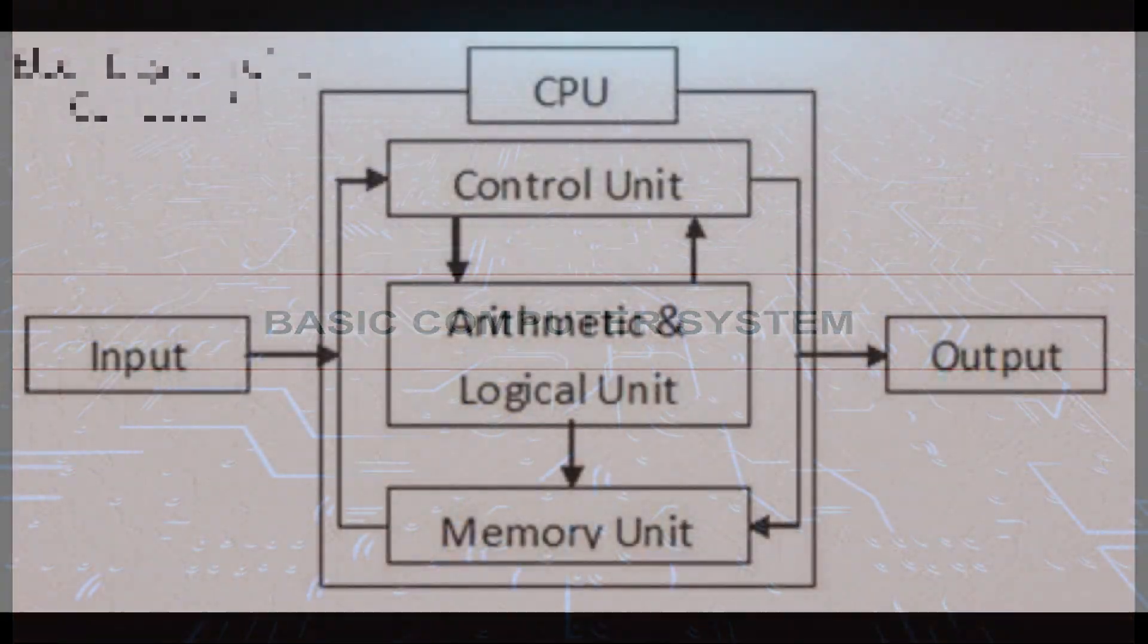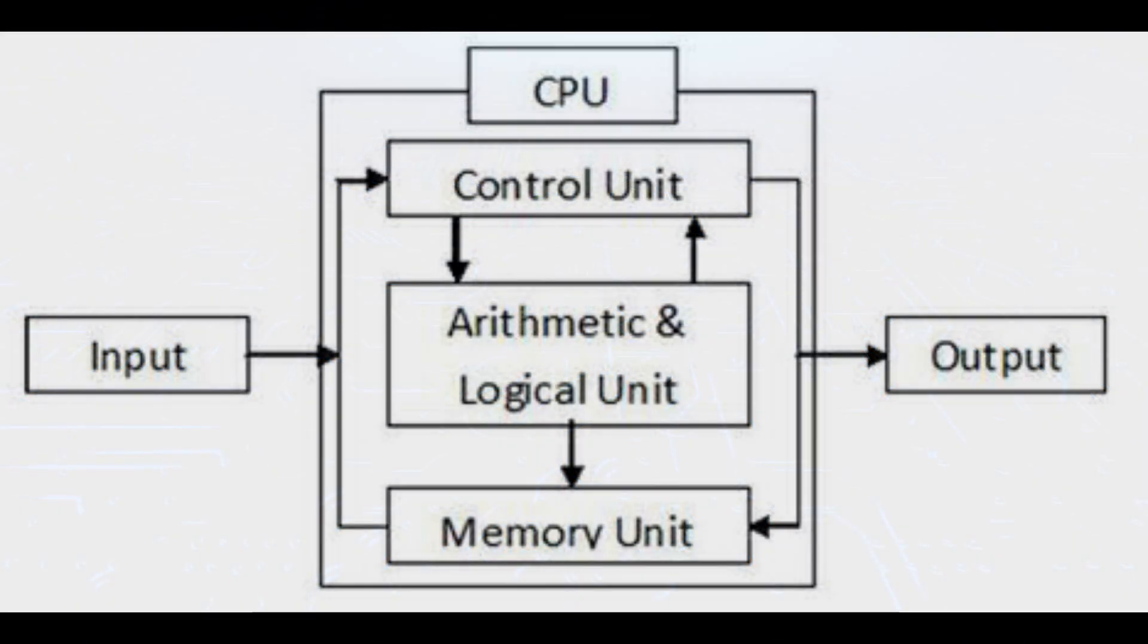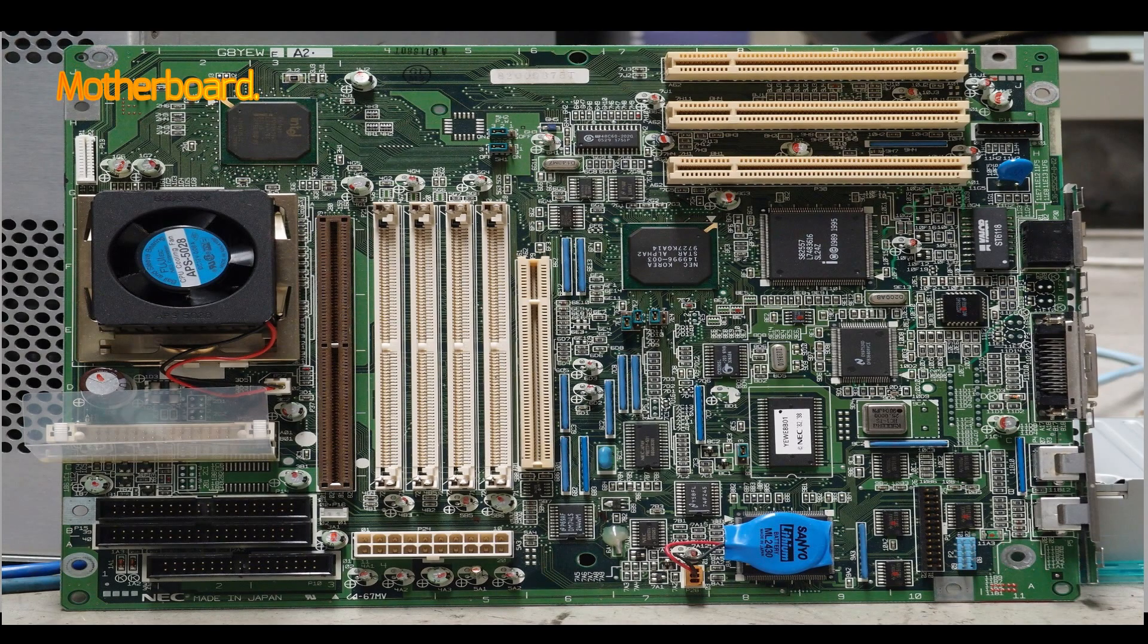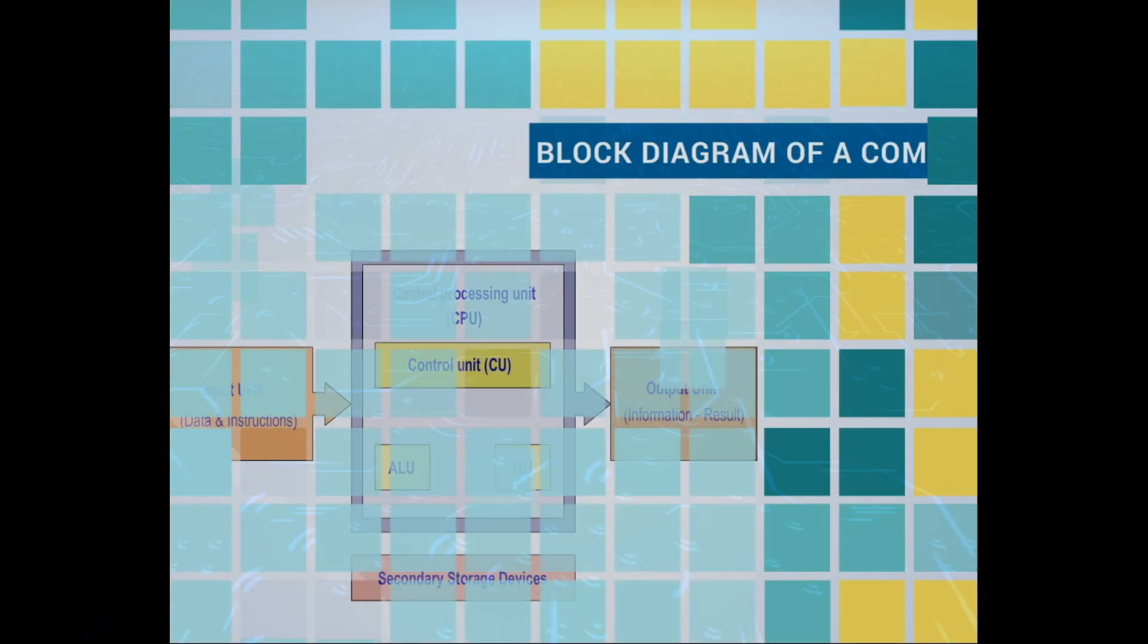In this lecture, we are going to learn about the block diagram of a computer system. A block diagram is like a map that shows the main parts of the computer and how they are connected. It includes the brain (CPU), memory, input and output devices, and the motherboard that connects everything. This map helps us understand how the computer works.